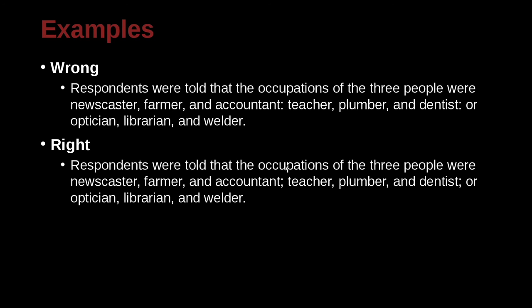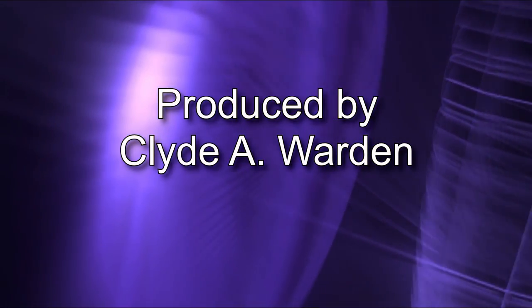Respondents were told that the occupations of the three people were newscaster, farmer, and accountant; teacher, plumber, and dentist; or optician, librarian, and welder. And in this case, what we have is a list. We have three lists, right? This is A, and then this is B, and then this is C. And each list has three things. One, two, and three. One, two, and three. One, two, and three. So how do we separate those? Because we've got a comma, a comma, a conjunction. And then what do we use? We use the semicolon. A comma, comma, and the last one has the conjunction there. And then a semicolon. So this one is correct.